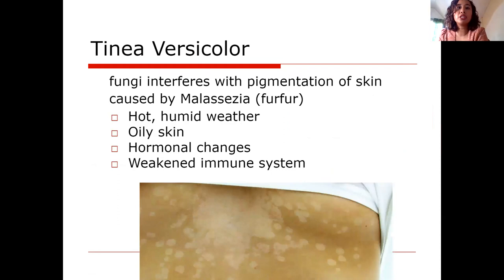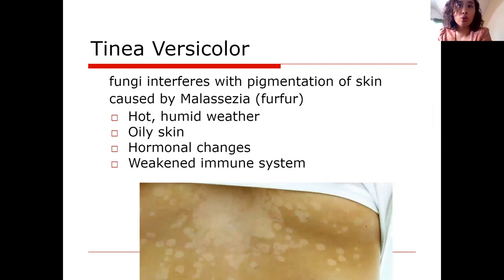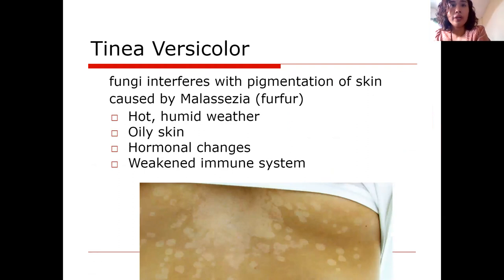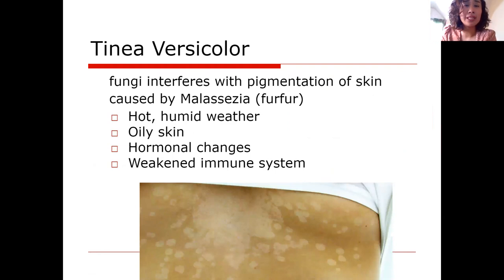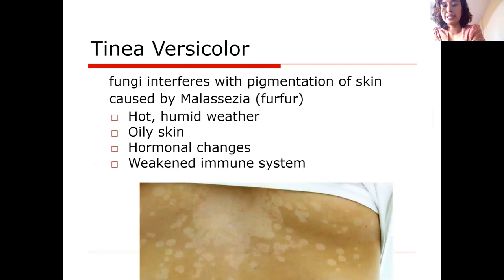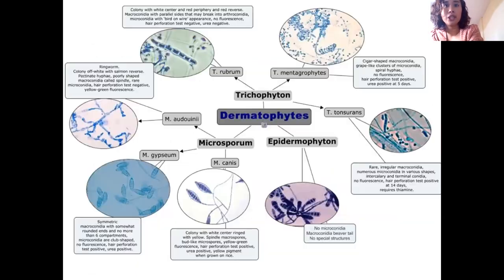Tinea versicolor is a superficial mycosis causing changes in skin color, caused by Malassezia. Risk factors include humid weather, increased moisture in the air, oily skin, hormonal changes, and weakened immune system — causing color changes in the skin.